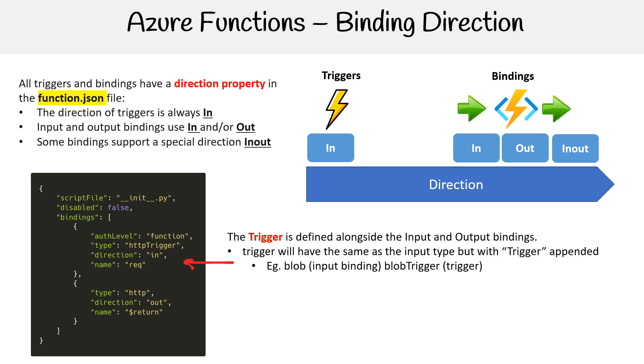And that's how you would know the difference. So again, just iterating, see where it says type here? If it was just HTTP, then it would just be a binding. But if it's an HTTP trigger, then it's a trigger with also an in binding.